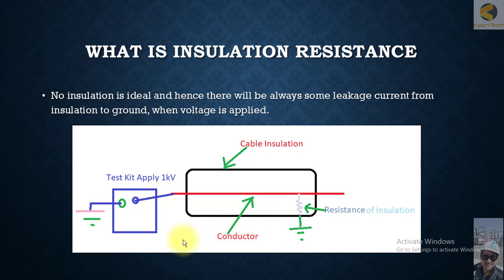When we apply current, this is our testing kit. One side we have grounded, the other side we are connecting to our cable conductor. Both ends of conductors are isolated, this is the requirement. Then we apply the voltage, and you can see some leakage current will be flowing through this insulation to ground, and from the ground it will come back to the test kit.